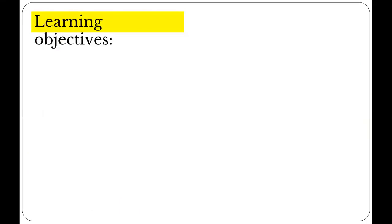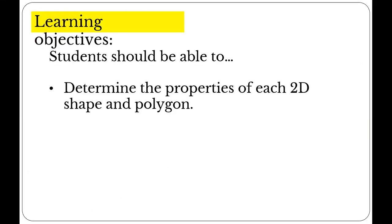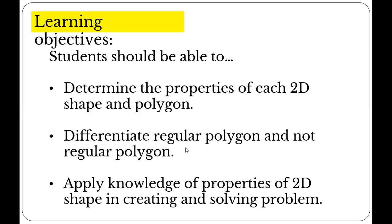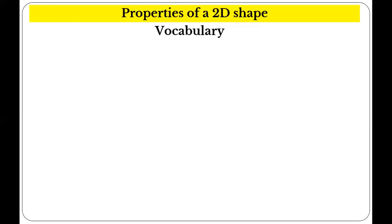What is our lesson objective? The learning objective is students should be able to determine the properties of 2D shapes and polygons, differentiate regular polygons and irregular polygons, and apply knowledge of properties of 2D shapes in creating and solving problems.